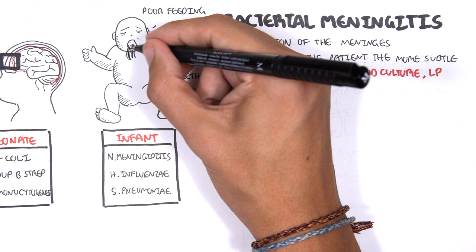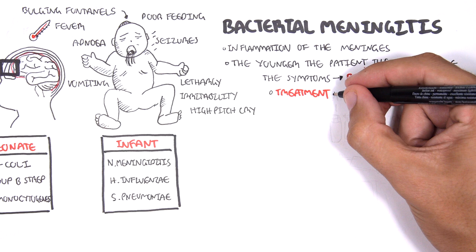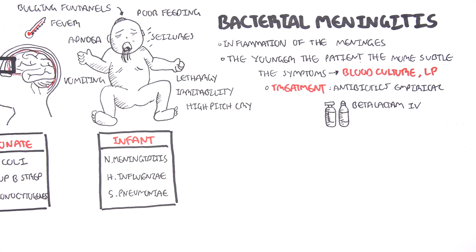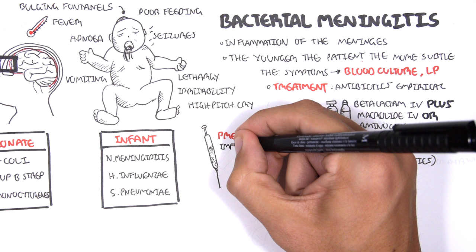Treatment includes antibiotics empirically, which mainly involve the beta-lactams plus a macrolide or aminoglycoside. Dexamethasone, which is a steroid, is usually administered before antibiotics because it is shown to have overall benefits. Vaccination is very important as a preventative measure as vaccination against some of these causative agents has been shown to reduce the incidence of meningitis.